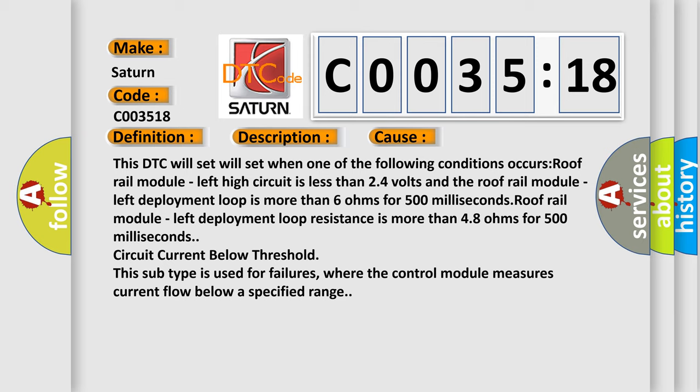Circuit current below threshold. This subtype is used for failures where the control module measures current flow below a specified range.